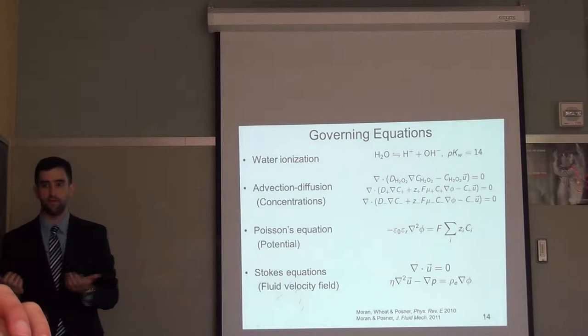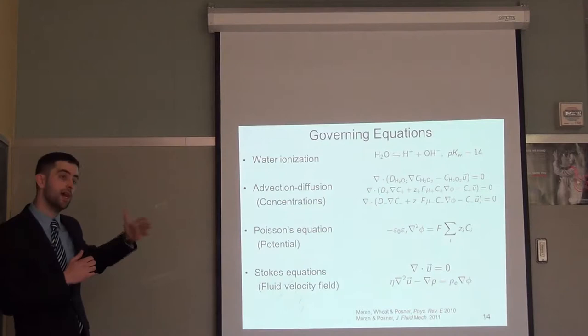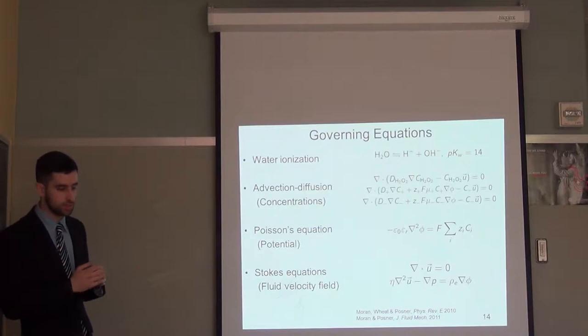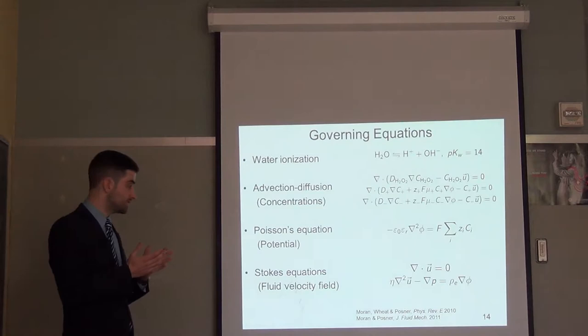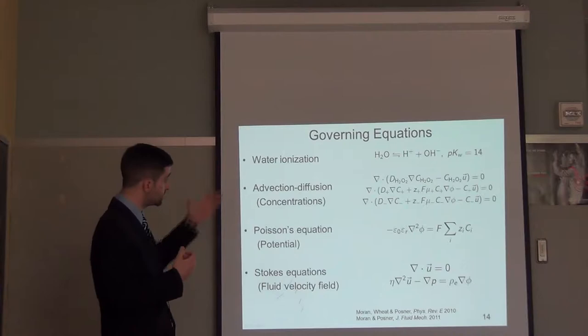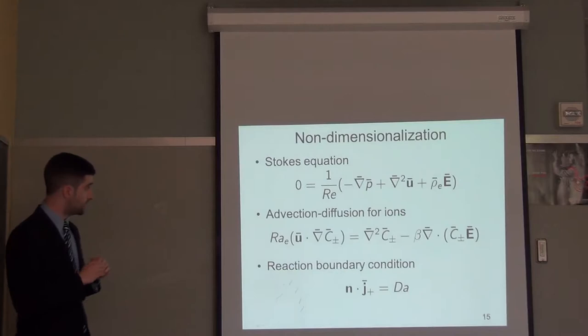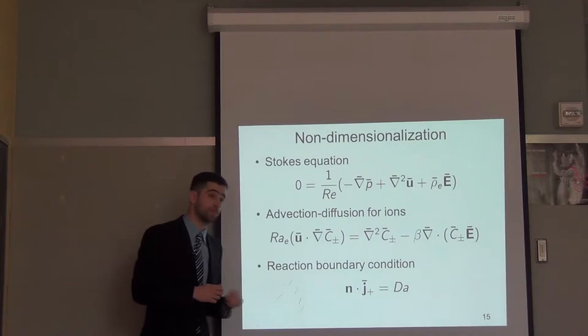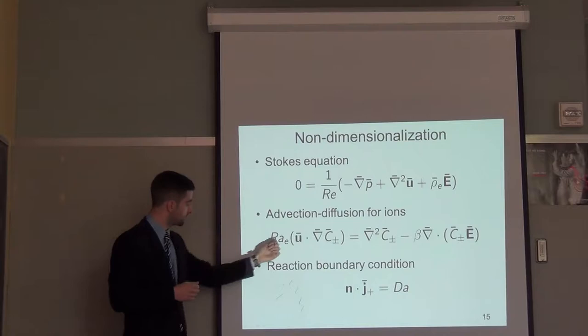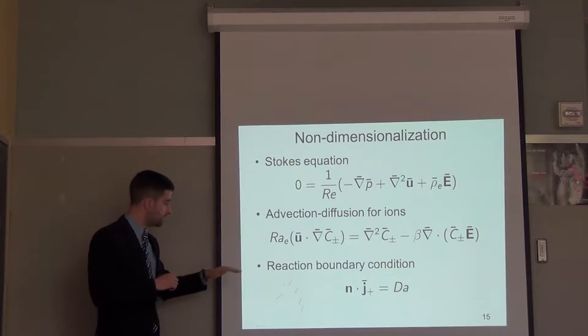Many people have to make assumptions to obtain approximate analytical solutions, such as assuming the double layer is infinitely thin or assuming the particle is a spheroid instead of a rod. We want to incorporate all important physics and account for the cylindrical geometry of the rod, so we solve the full non-linear system. By choosing appropriate scalings, we derive non-dimensional forms of the equations. The non-dimensional Stokes equation gives a Reynolds number of order 10 to the minus 5. The transport equations give an electric Rayleigh number — also fairly small — and a parameter beta. The non-dimensionalized reaction boundary condition gives a Damköhler number.